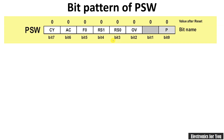Here is the bit pattern for the PSW register. It is an 8-bit register, starting from bit 0 and ending at bit 7. As per the pattern, bit 7 is the Parity flag (P), then the Overflow flag (OV), then F0, then a blank bit, then AC for Auxiliary Carry, and CY for the Carry flag. There are also two bits RS1 and RS0.